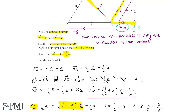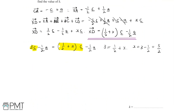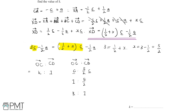Looking back at what the question asks: the ratio OC to CD equals K to 1. We know the vector OC equals c and the vector CD equals 5 over 2 times c. Dividing both by c, OC to CD equals 1 to 5 over 2. To convert this to the form K to 1, we multiply both sides by 2 over 5, giving K equals 2 over 5.